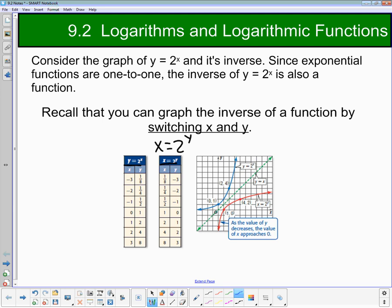So the original function that we had was y equals 2 to the x, and it gave us this graph right here. Now again, when we find the inverse, we switch the x and the y. So all of the x's were switched with the y's, and that gave us these points here.